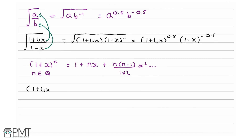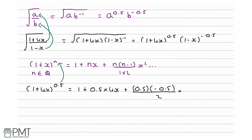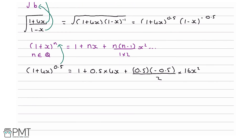For 1 plus 4x to the power of 0.5, our n is 0.5, so this equals 1 plus 0.5 times 4x plus 0.5 times minus 0.5, all over 2, times 4x all squared which is 16x squared. Simplifying: 0.5 times 4x is 2x, and 0.5 times minus 0.5 is minus 0.25; minus 0.25 over 2 is minus 0.125, and minus 0.125 times 16 is minus 2. So this gives us 1 plus 2x minus 2x squared.